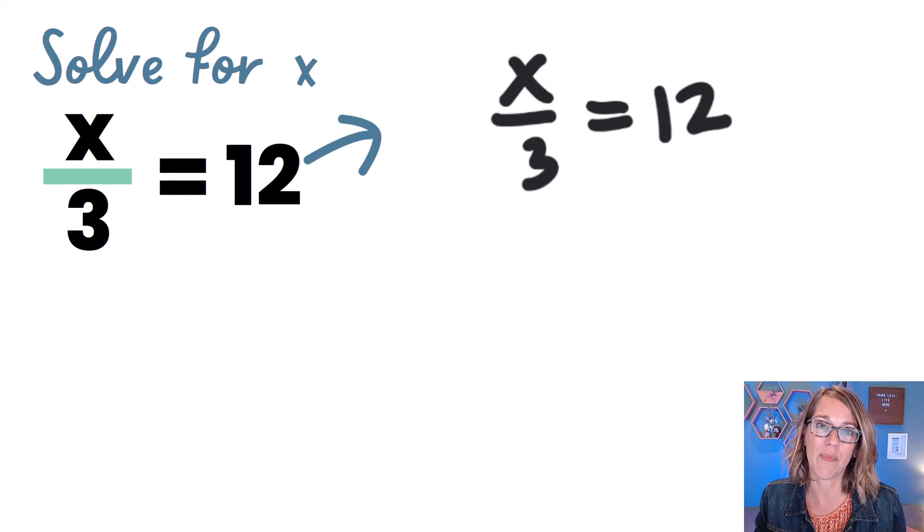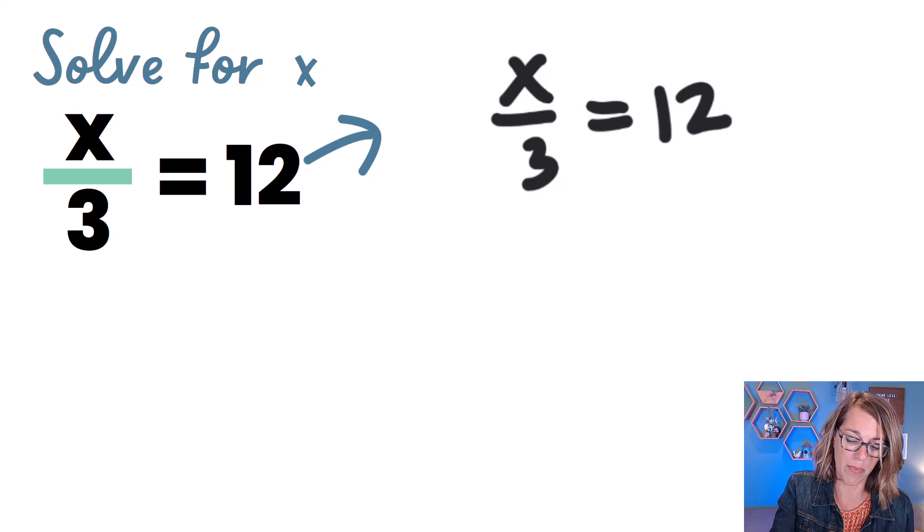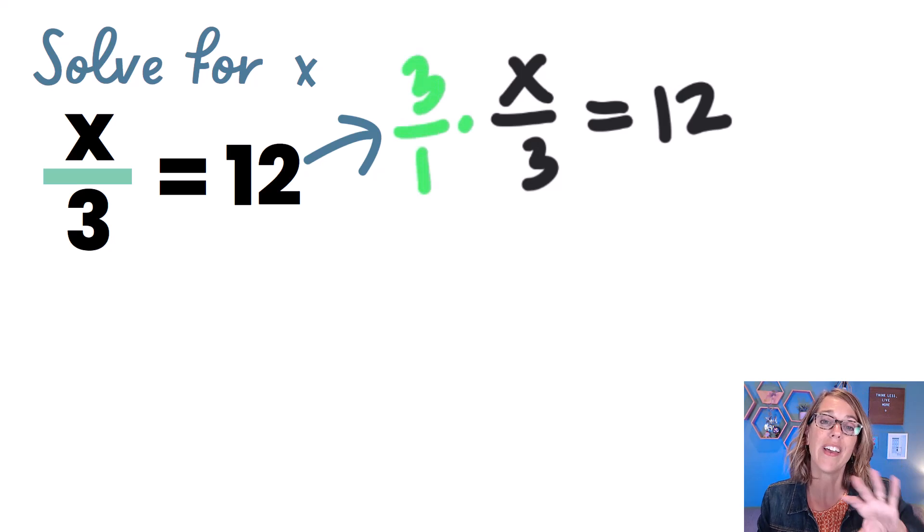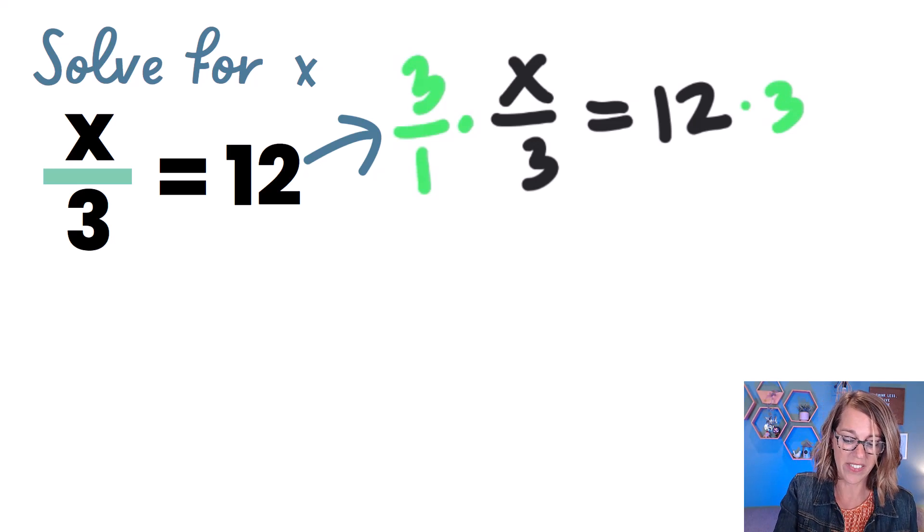I want to undo that division by 3. So I'm going to multiply both sides by 3. And I want you to think of that as a 3 over 1. So we keep everything lined up over on the left-hand side. And then on the right-hand side, we don't really need that 3 over 1. It's going to be 12 times 3. Now working this out,